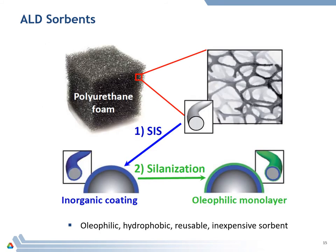The final application I wanted to talk about is ALD sorbents. If we start with polyurethane foam and use sequential infiltration synthesis of aluminum oxide, we can put a thin inorganic layer on the ligaments of the foam. If we follow that with a chemical silanization to put down an oleophilic monolayer, we impart unique properties: the polyurethane becomes simultaneously oleophilic — so it adsorbs oil — hydrophobic, reusable, and inexpensive. So this can be used as a sorbent.